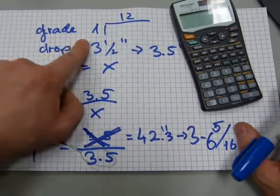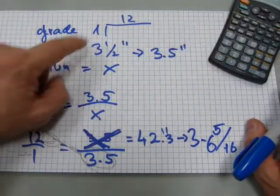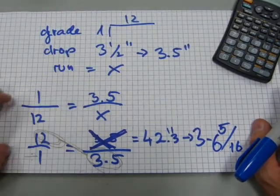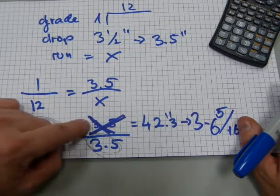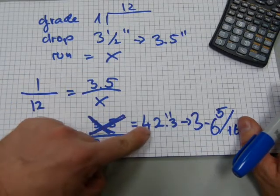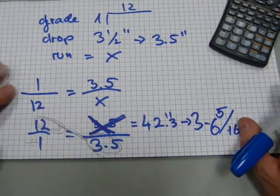If we have a slope, a grade of 1 to 12, and a drop of 3.5 inches, then the run of the pipe is, it was 42 inches. So that's that.